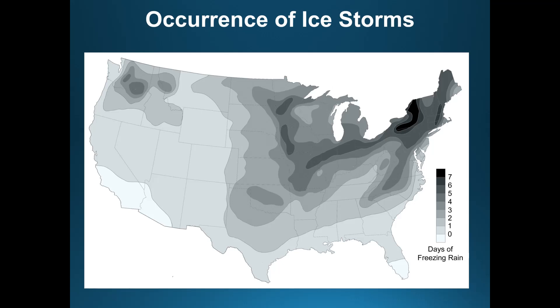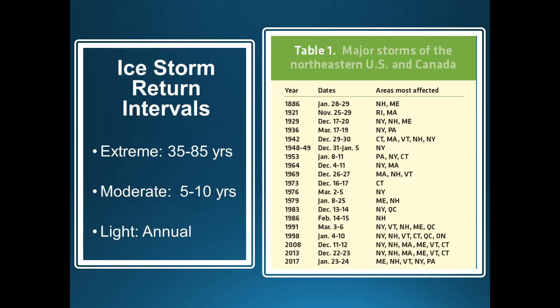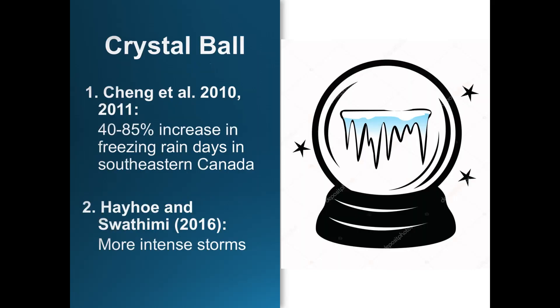We do know some things about ice storms. For example, we know that ice storms have generally occurred along an ice storm belt stretching from East Texas to New England, as well as parts of the Upper Midwest and the Pacific Northwest. And we know that, at least here in the Northeast, return intervals for extreme ice storms are on the order of 35 to 85 years, for moderate ice storms on the order of 5 to 10 years, and we are seeing light icing just about every year.